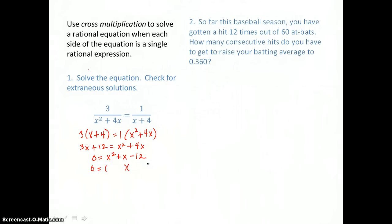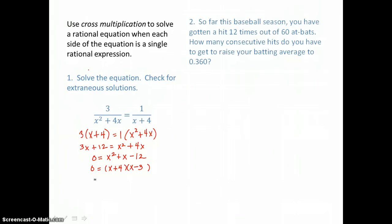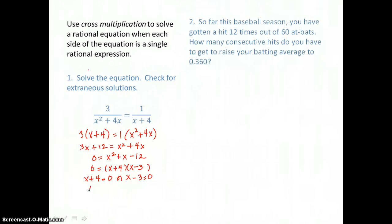Then I can use the zero product property to solve. Factors of x squared go first: x times x. Factors of 12 that have a difference of 1 are 4 and 3. I want to make the 4 positive and the 3 negative, so that positive 4x plus negative 3x is positive 1x in the middle, and positive 4 times negative 3 is negative 12. Those factors check. Setting each factor equal to 0, x equals negative 4 or x equals positive 3.